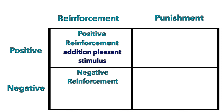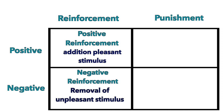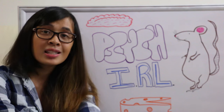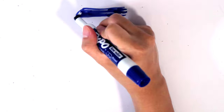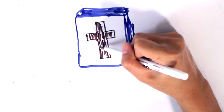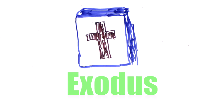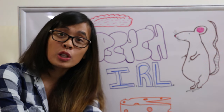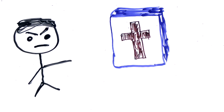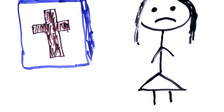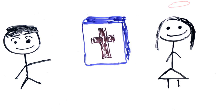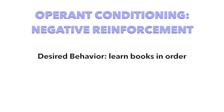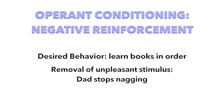Reinforcement can also be negative — that's the removal of an unpleasant stimulus. Back to elementary school: I actually went to a Christian elementary school, and we were made to memorize the books of the Bible in order. My dad would not stop nagging me. He nagged me until I did it three times perfectly. So the behavior I had to learn was all of those books in order, and the removal of the unpleasant stimulus was that my dad would stop nagging me.